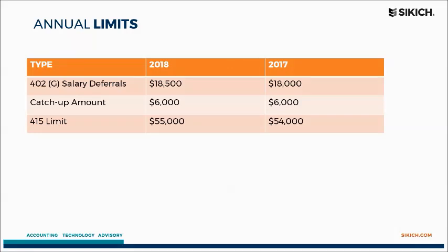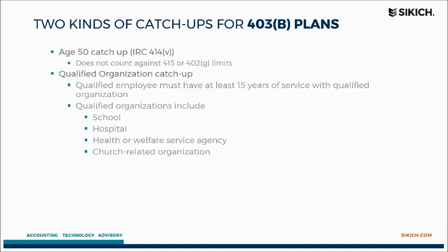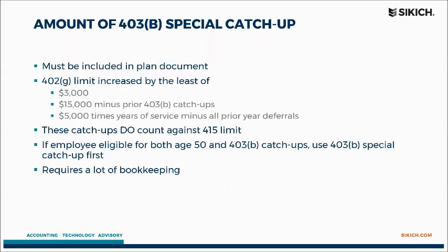Regarding contribution limits — the IRS recently issued 2018 limits. We did see a slight increase in salary deferrals under the 402(g) limit, up to $18,500. Catch-up limits are also included, as well as overall limits. There are actually two different types of catch-ups for 403(b) plans. One is the age-50 catch-up with $6,000 extra. The other is for employees of qualified organizations with at least 15 years of service who can qualify for additional contributions beyond the regular limit. This must be included in the plan document and requires bookkeeping to track, resulting in some participants able to contribute above the normal $24,000.